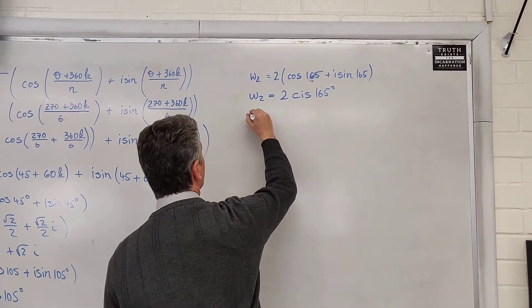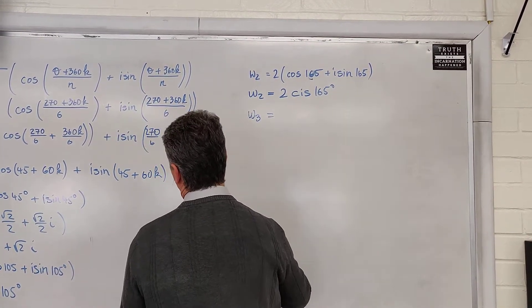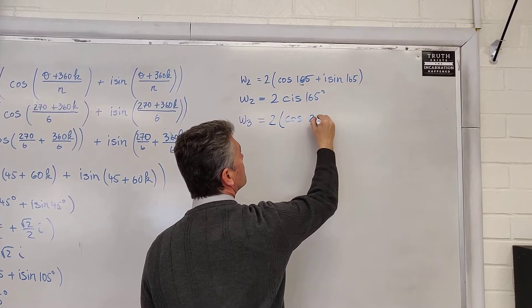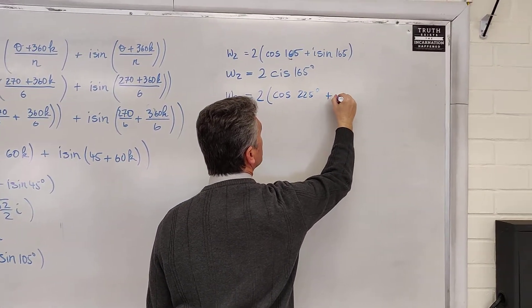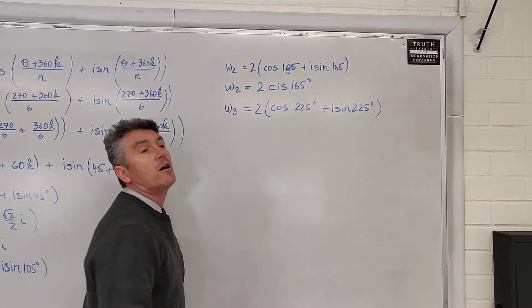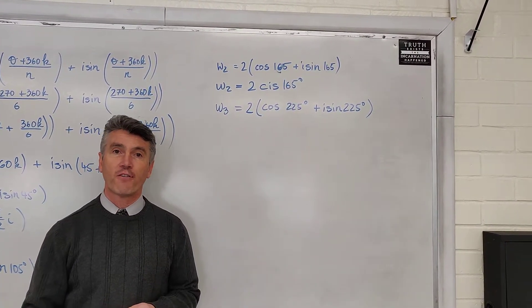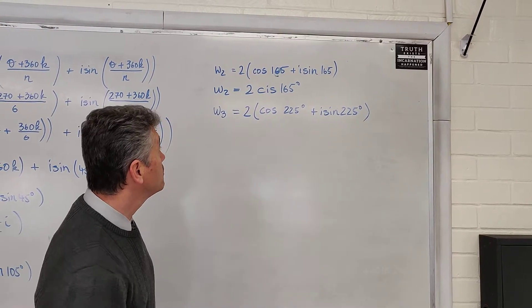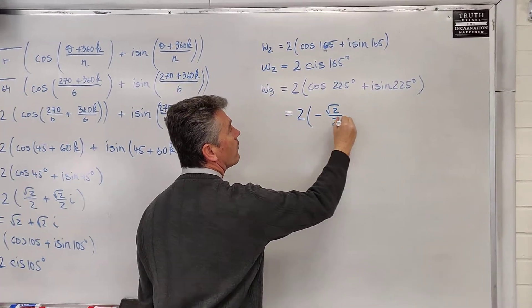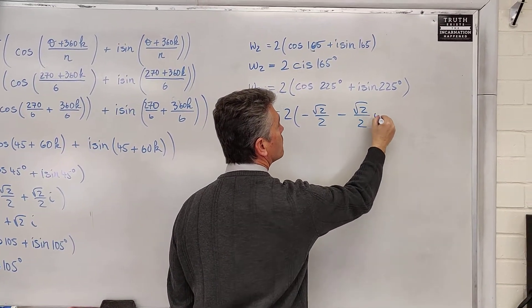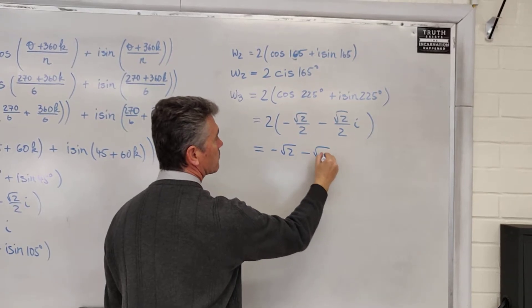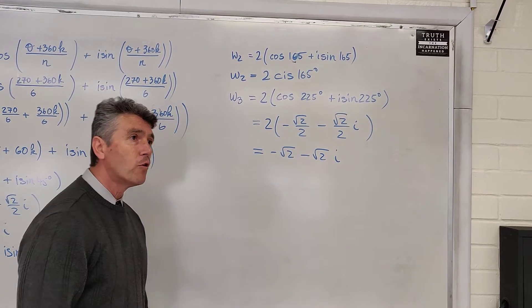W sub 3. W sub 3. We replace k by 3. This is 2 cosine of 225 degrees plus i sine of 225 degrees. Good news this time. If you draw the angle, you get a reference angle of 45 degrees. So, we can actually use special right triangles. This is 2 times negative square root of 2 over 2 minus square root of 2 over 2i. This is negative square root of 2 minus square root of 2i. Only 2 more to go.